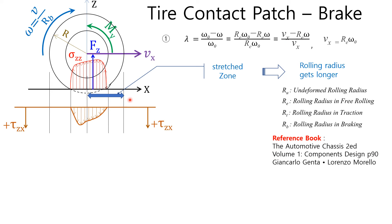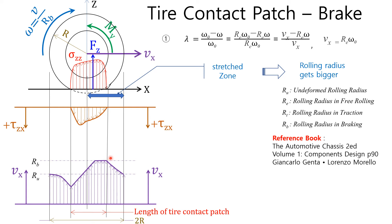This figure explains the tire contact patch behavior when the brake force is applied. The leading half and the area just before the tire contact patch is stretched when the brake force is applied, and the effective rolling radius gets longer, as explained in the previous video E3. Shear stress TAU_ZX in the tire contact patch has a plus sign because the tire pushes the road forwards. This horizontal straight line of the velocity graph represents the non-slip area of the tire contact patch. In this area, both the wheel radius and the wheel speed reach their highest values respectively.